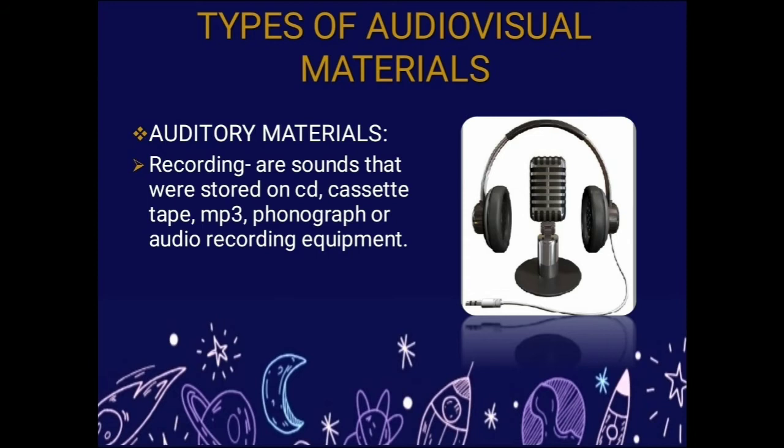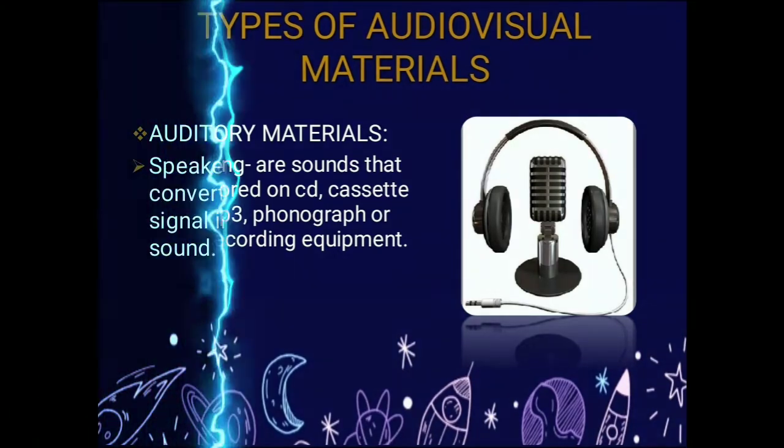Types of audio visual materials. First, auditory materials: recordings are sounds stored in CD, cassette tape, MP3, phonograph, or audio recording equipment. It is a series of numbers that were stored, can be saved, and played hundreds of times.